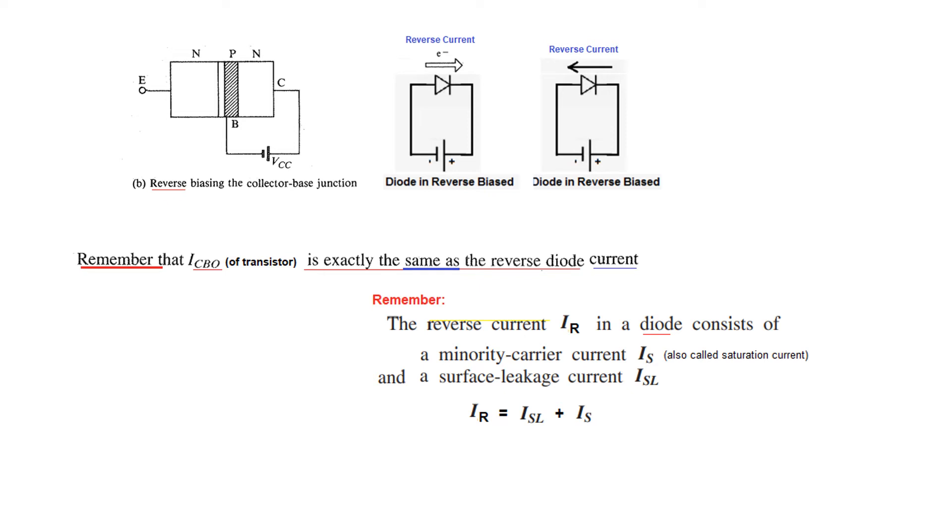Very important point: the reverse diode current IR in a diode consists of two parts. One is the minority carrier current IS, also called the saturation current, and it is highly dependent on the temperature. The other part is the surface leakage current ISL. Now with this idea, for a transistor we can write that ICBO is equal to exactly the same thing: ISL plus IS.